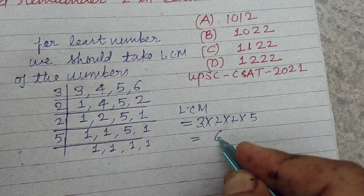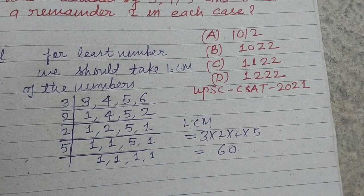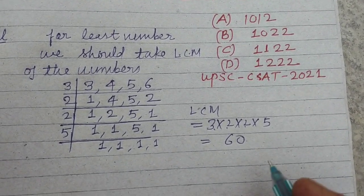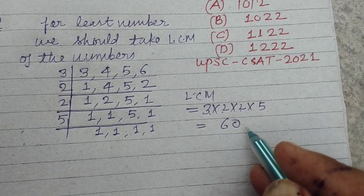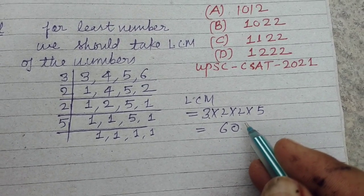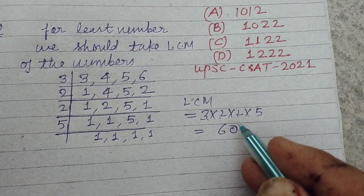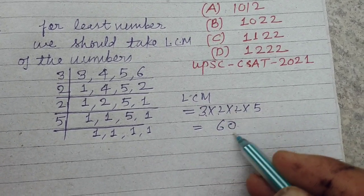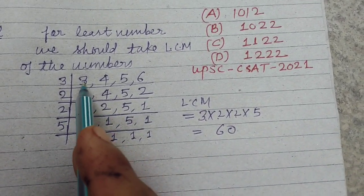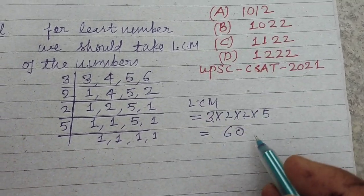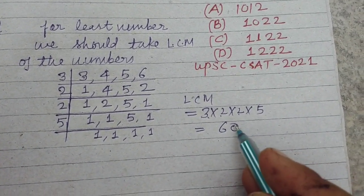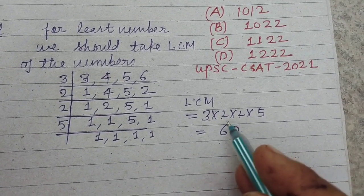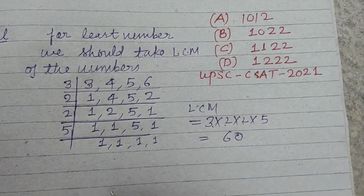60 is the LCM of these numbers. Students, when we multiply the LCM by any number we get the LCM. So multiplying or making it n times is also an LCM of these numbers.